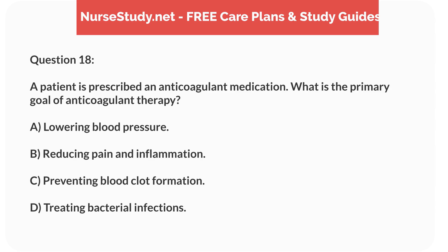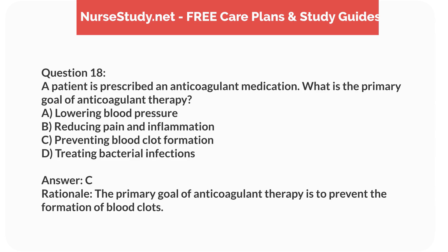Question 18. A patient is prescribed an anticoagulant medication. What is the primary goal of anticoagulant therapy? A. Lowering blood pressure. B. Reducing pain and inflammation. C. Preventing blood clot formation. D. Treating bacterial infections. Answer: C. Rationale: The primary goal of anticoagulant therapy is to prevent the formation of blood clots.